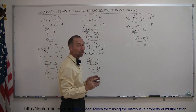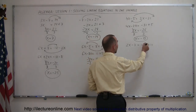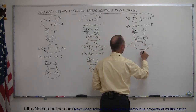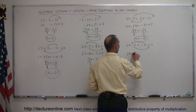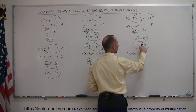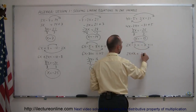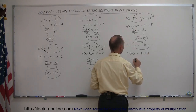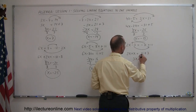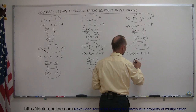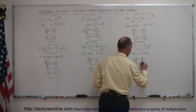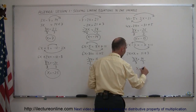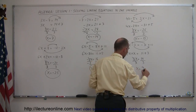Finally, the last example: move all the x's to one side and all the numbers without x to the other side, so we have 2x plus x. Remember, when you cross the equal sign the sign changes, so that equals 11 plus 3. And 2x plus x is 3x, which equals 11 plus 3, which is 14. We divide both sides by the numerical coefficient 3 — the 3s cancel out — so x equals 14 over 3.